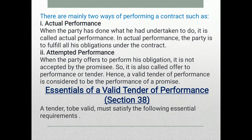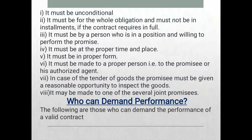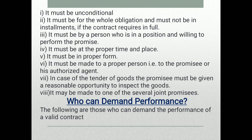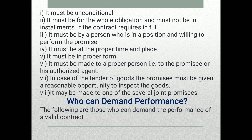The essentials of a valid tender of performance are: first, it must be unconditional; second, there must be a whole obligation, or it must be done in installments if the contract requires it; third, if the full contract is required, it must be performed by a person who is in a position and willing to perform the promise; and fourth, it must be at a proper time and place.